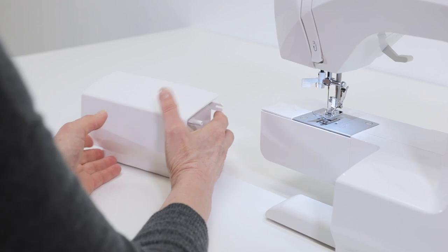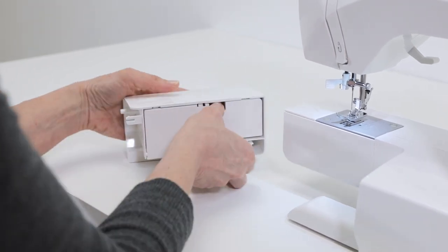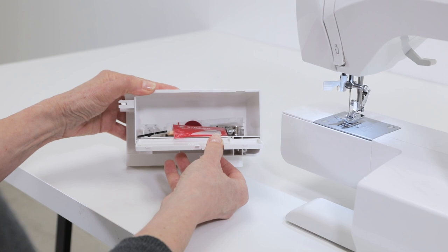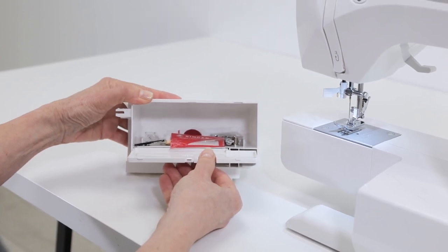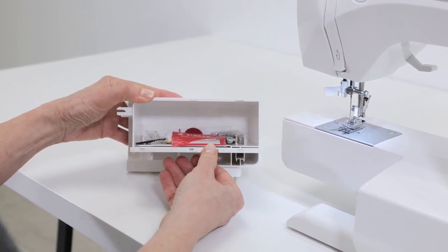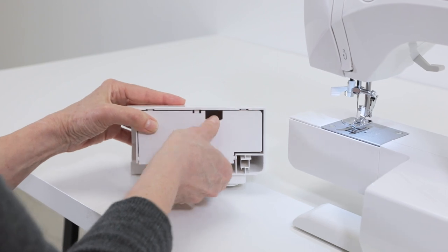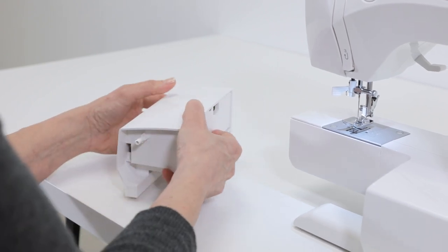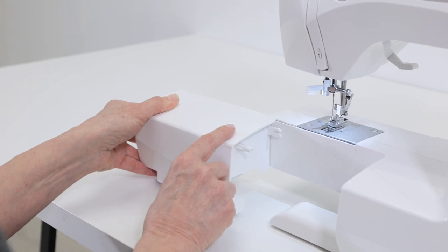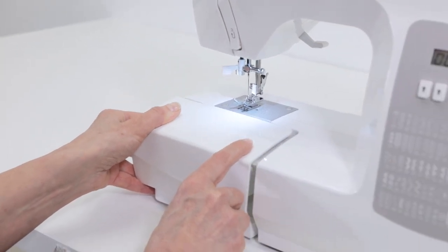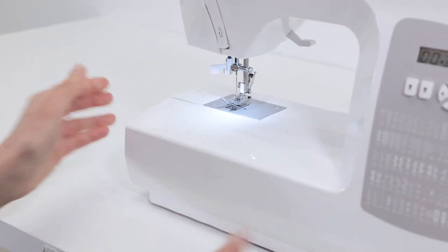The removable storage compartment has an opening in the back where you can store your machine's accessories that came with your machine. Then they're handy at your fingertips any time you're ready for them. When you're ready to replace the removable storage compartment, just slide it on from left to right, and it just clicks into place.